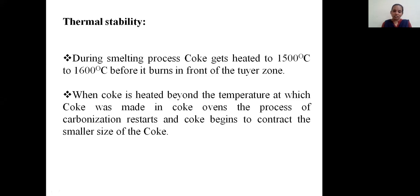In front of the tuyere zone only 1600 degree Celsius or higher temperature is maintained. When coke is heated beyond the temperature at which coke was made in coke ovens, the process of carbonization restarts and coke begins to contract the smaller size of the coke. But it will withstand the temperature up to which it may resist before it burns and changes its properties. So this is about thermal stability with respect to coke.